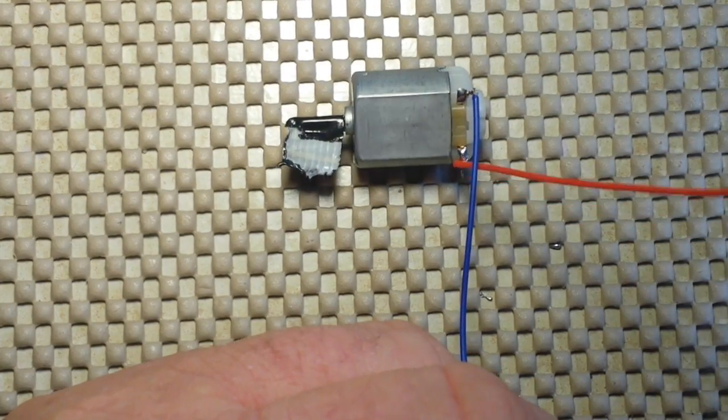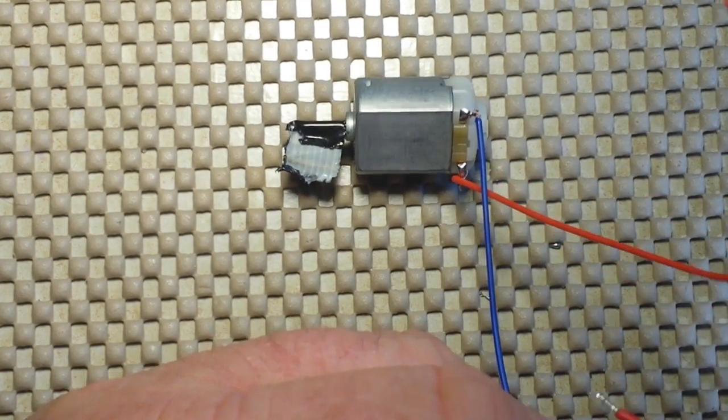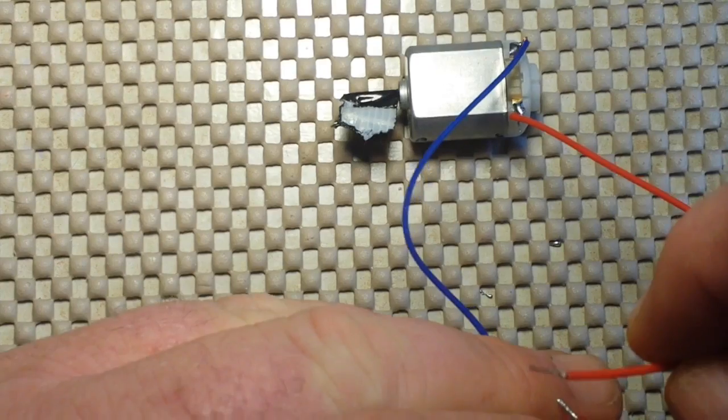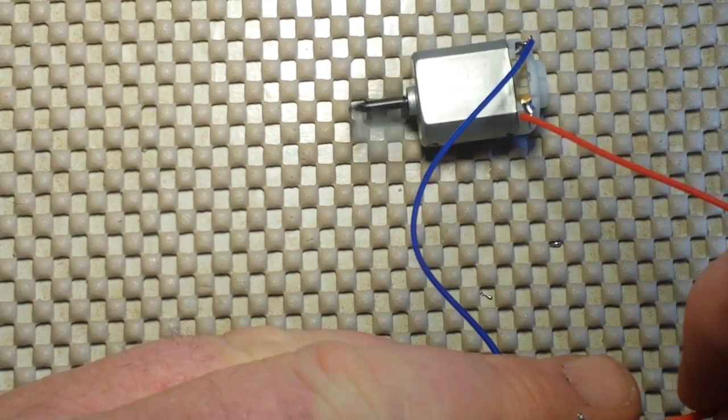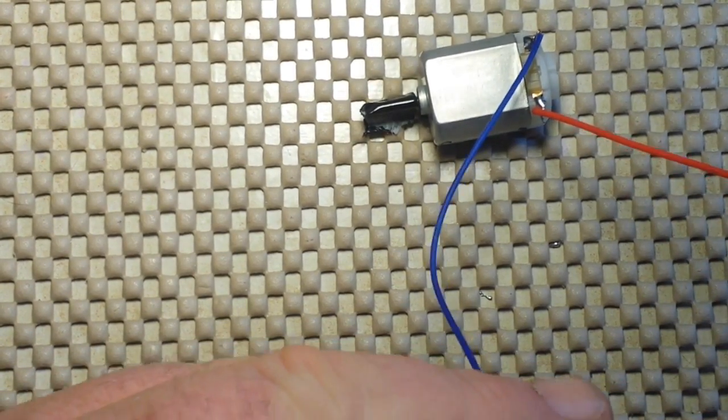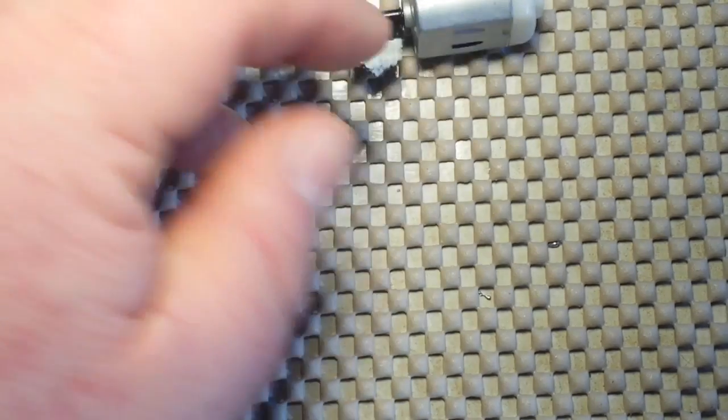If we put the current to it in the opposite direction, it will spin in that direction. In an earlier video, which I will link to down below, I showed you how to use a transistor to drive this from an Arduino.